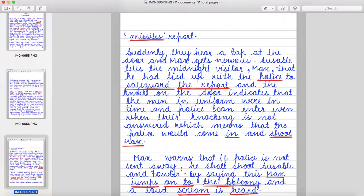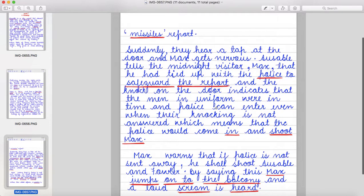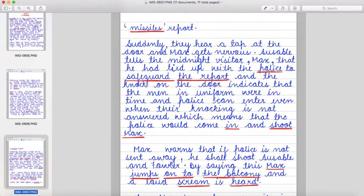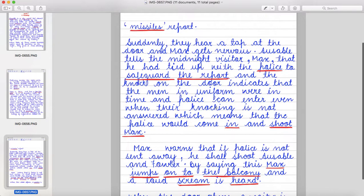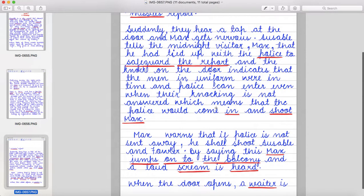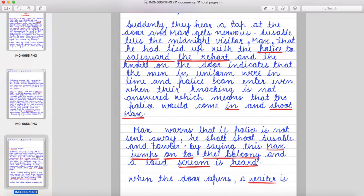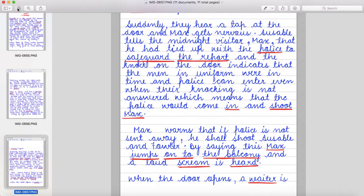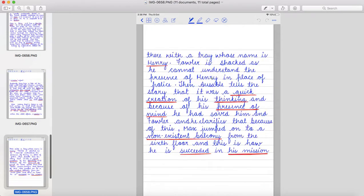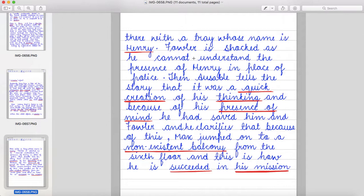Fowler looks through the window but see dark outside. Max tells Ausable that he entered the room with the help of passkey. Ausable keeps Max's attention engaged at the leakage of information about the missile's report. Suddenly, they hear a tap at the door and Max gets nervous. Ausable tells the midnight visitor Max that he had tied up with police to safeguard the report and the knock on the door indicates that the men in uniform were in time.